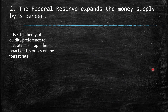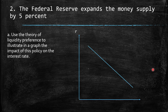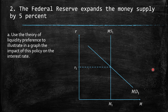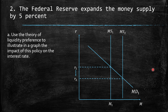Question 2: The Federal Reserve expands the money supply by 5%. Use the theory of liquidity preference to illustrate in a graph the impact of this policy on the interest rate. We have interest rate on the y-axis and quantity of money on the x-axis. Due to the 5% expansion of monetary supply, we face a lower interest rate and more quantity of money in the market.